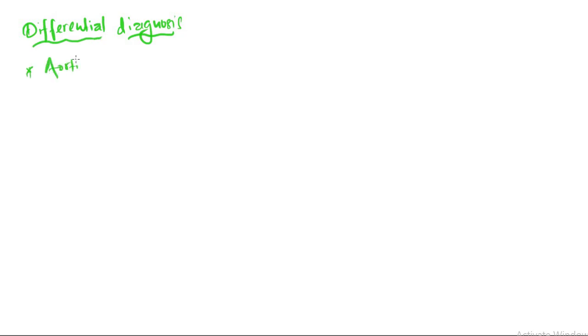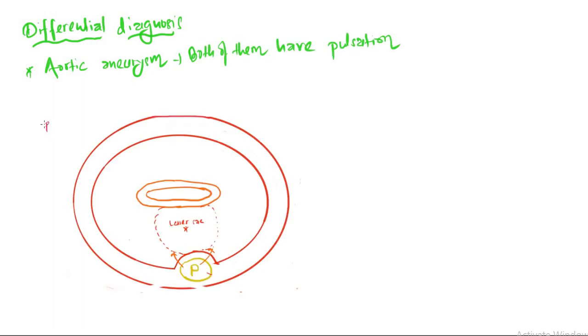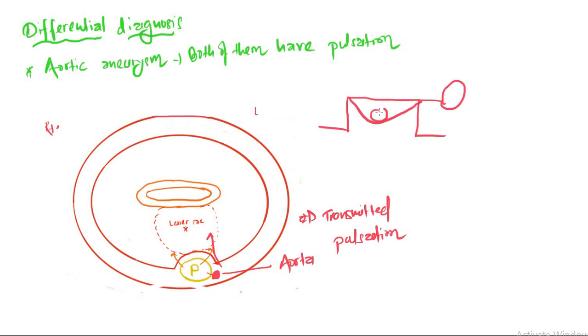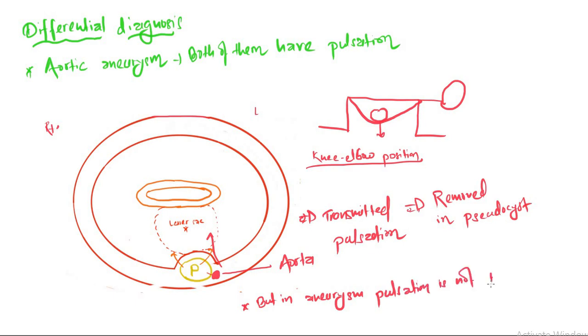Talking about differential diagnosis: aortic aneurysm can be a differential diagnosis because both of them have pulsations. The aorta is on the left side, left and posterior to the pancreas, and it can emit transmitted pulsations to the pseudocyst. In knee-elbow position, the cyst goes downward, thus the transmitted pulsation is removed in case of pseudocyst, but in aneurysm the pulsation is not transmitted, so it remains the same even in knee-elbow position.